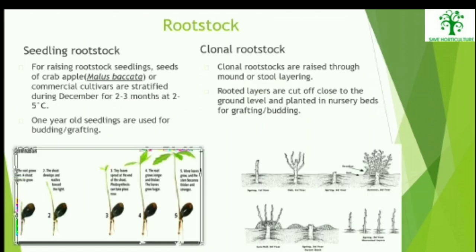Seedling Root Stocks: For raising root stock seedlings, seeds of crab apple (Malus baccata) or commercial cultivars are stratified during December for 2–3 months at 2–5 degrees Celsius. After this, 1-year-old seedlings are used for budding and grafting.